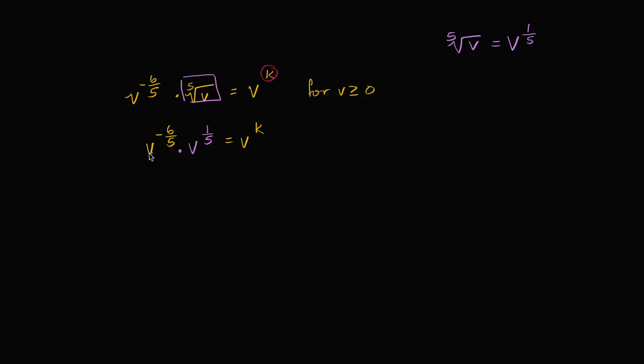Now, if I'm multiplying v to some power times v to some other power, we know what the exponent properties would tell us. And I could remind us, I'll do it over here. If I have x to the a times x to the b,